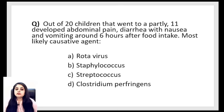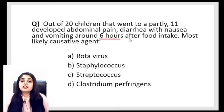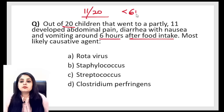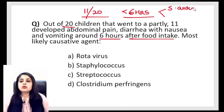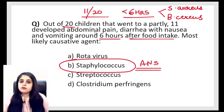Next question: Out of 20 children at a party, 11 developed abdominal pain, diarrhea with nausea and vomiting around 6 hours after food consumption. The most likely agent? Within 6 hours, I think of Staphylococcus aureus and Bacillus cereus. Looking at the options, only Staphylococcus aureus is there. So by looking at the incubation period alone, the answer is Staphylococcus aureus.